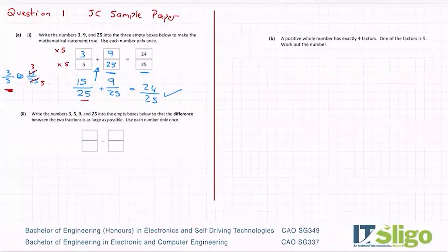Part two. Write the numbers 3, 5, 9 and 25 into the empty boxes below so that the difference, difference means subtract, between the two fractions is as large as possible. Use each number only once. So we want a large difference between them. So you may have to do this by trial and error until you see a pattern. Nothing wrong with that.